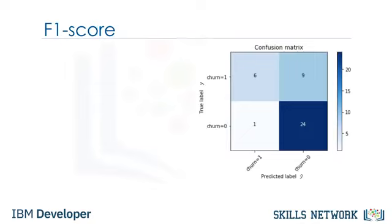Another way of looking at accuracy of classifiers is to look at a confusion matrix. For example, let's assume that our test set has only 40 rows. This matrix shows the correct and wrong predictions in comparison with the actual labels. Each confusion matrix row shows the actual true labels in the test set, and the columns show the predicted labels by classifier.